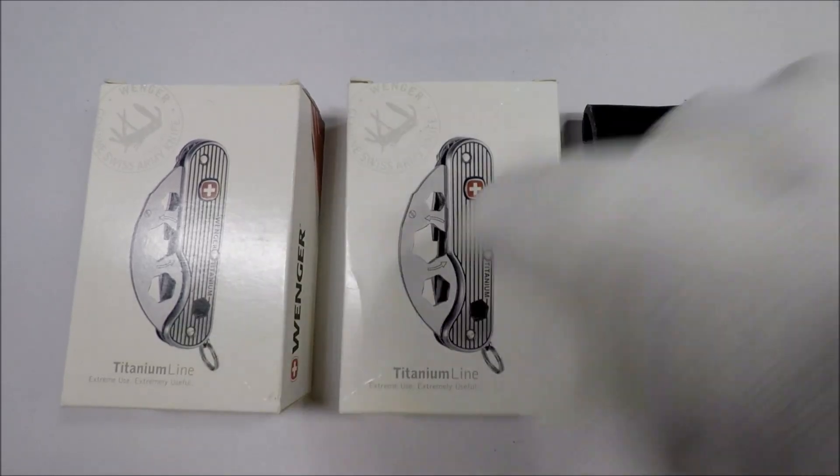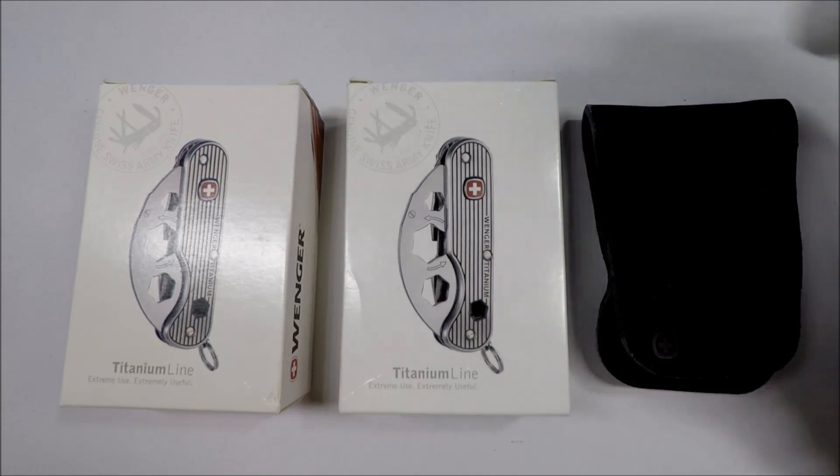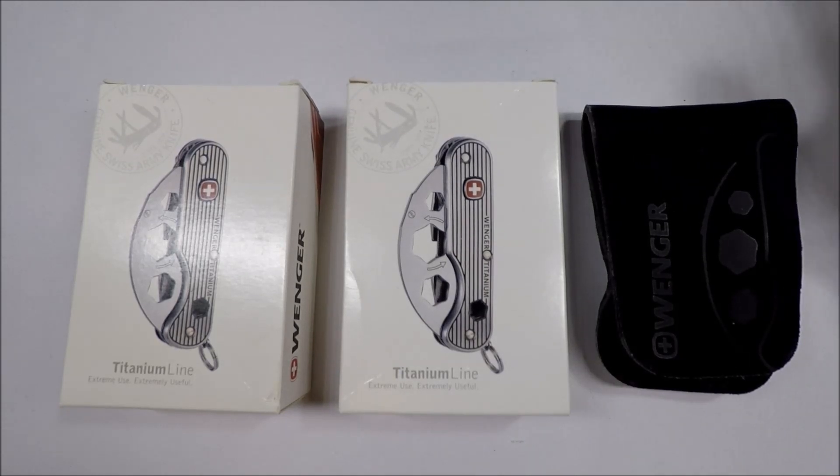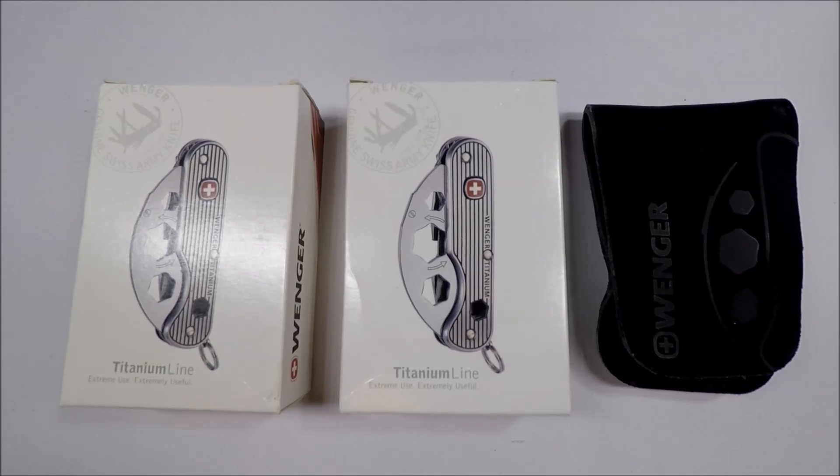I'll include a link in the description that has a Swiss Army knife wiki page about these. So what makes these distinctive, first of all, is the scales are made of a titanium alloy to help make them more rugged and more mountain climbing friendly from what I could tell. So let's take a look at them.